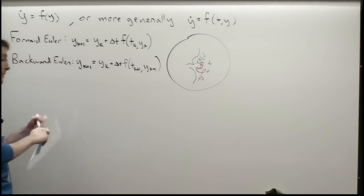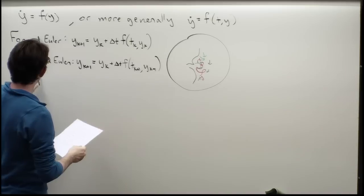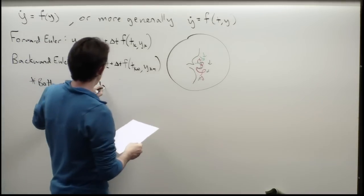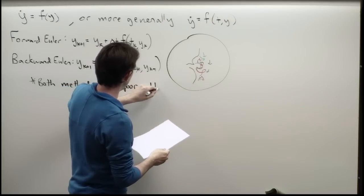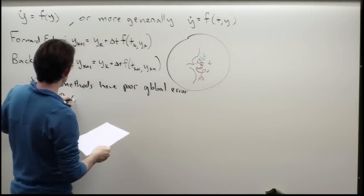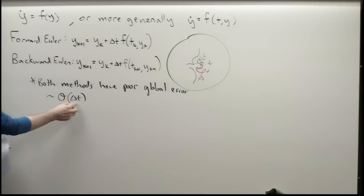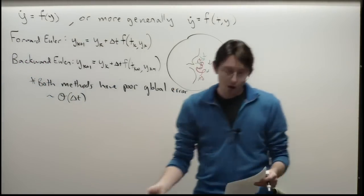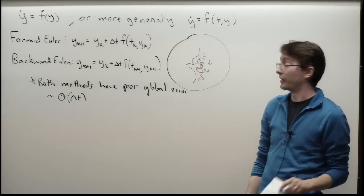Both methods had pretty poor global error — order delta-t global error. That means the only way to get a more accurate trajectory is to take a smaller and smaller time step, which can be very frustrating if you're waiting around for your simulation all day long.